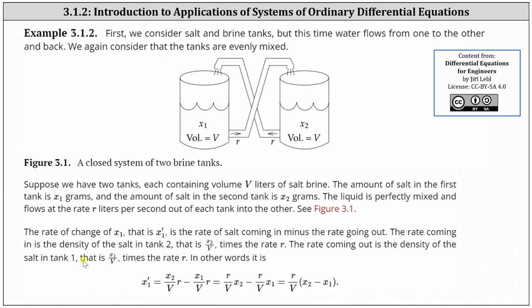And the rate coming out is the density of the salt in tank one, that is x1 divided by V times the rate r. In other words, x1 prime is equal to x2 divided by V times r minus x1 divided by V times r, which we can also write as r divided by V times x2 minus r divided by V times x1.